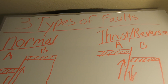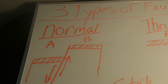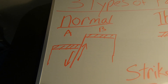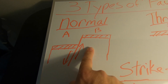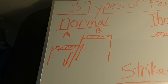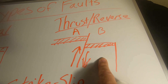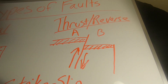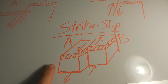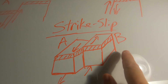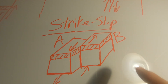Before we visit the Genoa Fault Zone, let's talk about the three types of faults we find in nature. First, we see normal faults, where block A moves down relative to block B — these are faults like we see in the Basin and Range. Thrust faults, where block A moves up relative to block B, like what we see with the Himalayan Mountains. And then we have strike-slip faults, where block A slides horizontally past block B, like the San Andreas Fault.